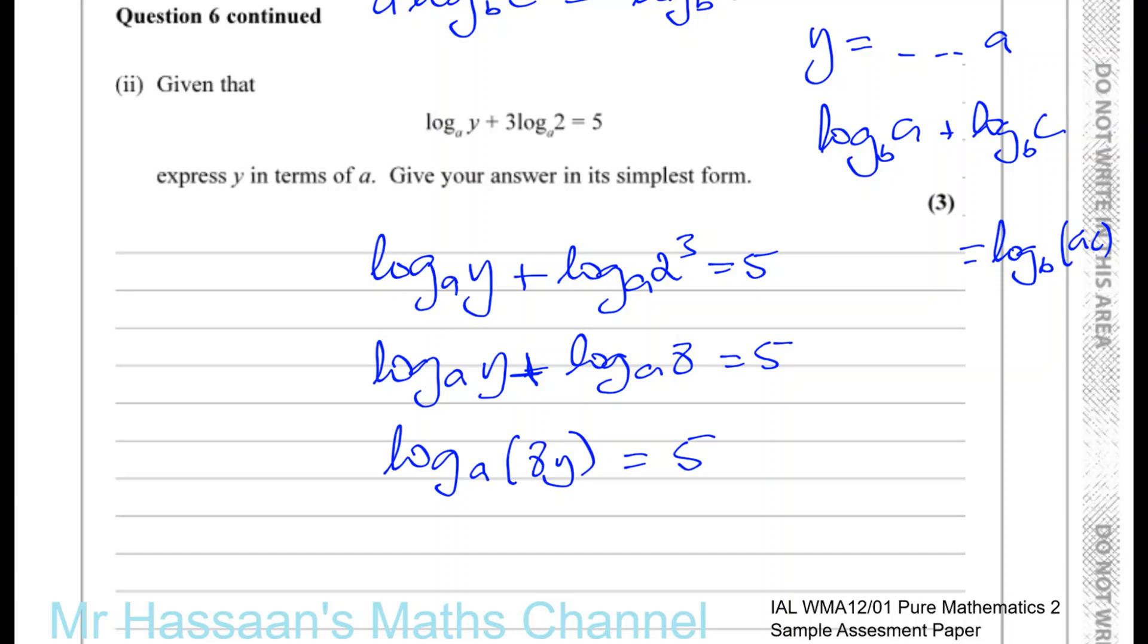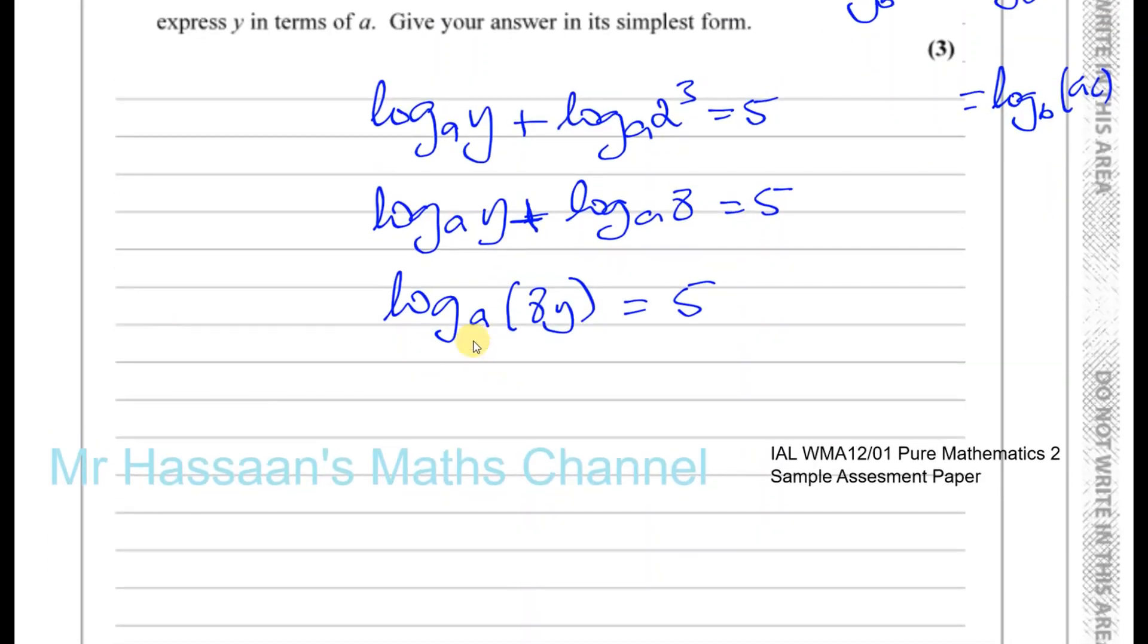And now I can use the definition of a logarithm that this is the base, this is the power, and this is the result. So I can say 8y is equal to A to the power of 5. Therefore, I want to make y the subject, y is equal to A to the power of 5 over 8. So I've made y the subject of this formula, and I've expressed y in terms of A. And that's the answer to this question.